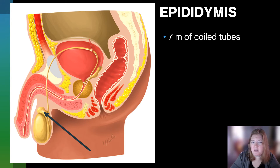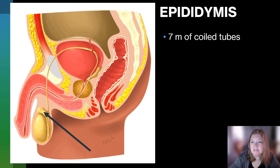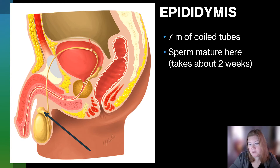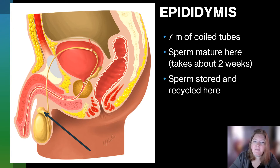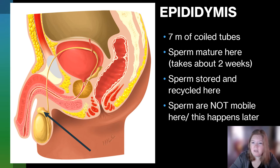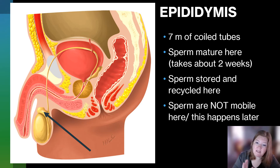We have the epididymis — seven meters of coiled tubes, just tightly coiled and wound. This is where sperm are going to mature, taking about two weeks for that process. Sperm are stored here and recycled here. Sperm are not mobile here; that will happen later when they are exposed to fluids later in the reproductive tract.